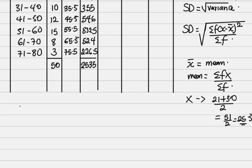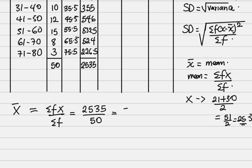Adding the fx column gives 2535. We go straight to find x̄, which is the mean: summation fx all over summation f, giving 2535 over 50, and our answer is 50.7.